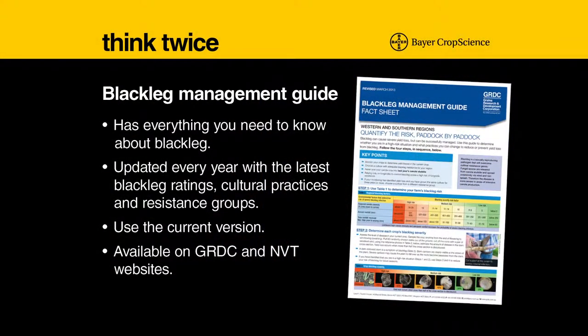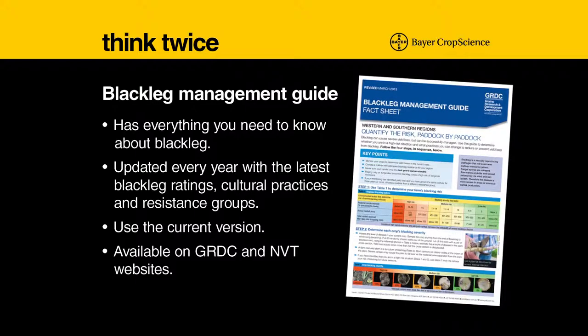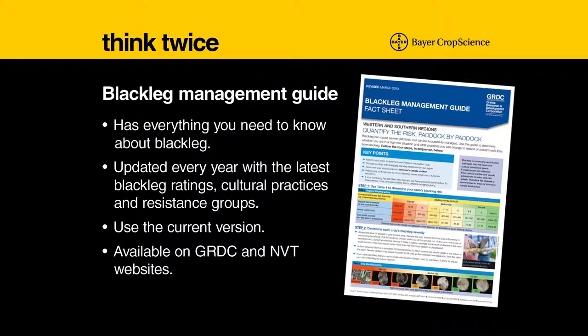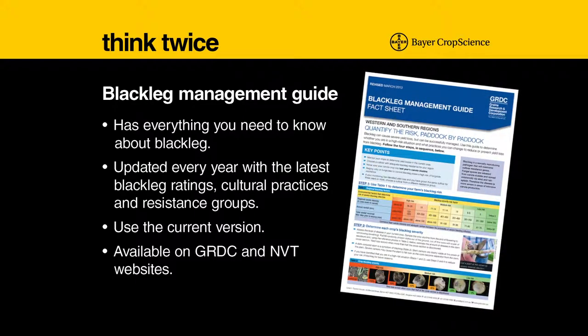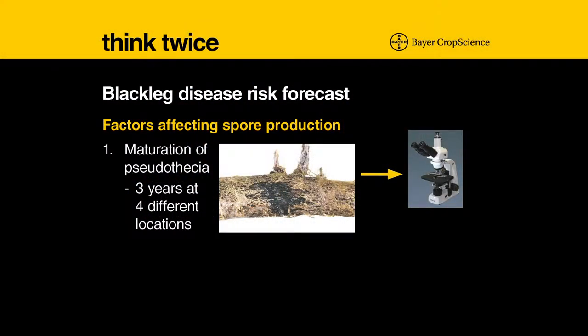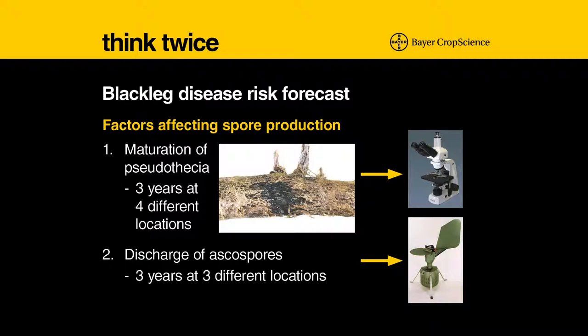The blackleg population on your individual farm may be different, so you really have to consider what cultivars or varieties you and your neighbors are growing. You need to monitor your crop in your paddock to see what level of disease you are getting. We did quite a lot of work on looking at the timing of Pseudothecia maturation in different areas of Western Australia, studied over three years at four different locations, with data collected from four different paddocks at each location. We also studied the discharge of ascospores for three years from three different locations.